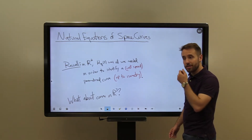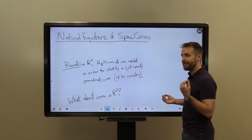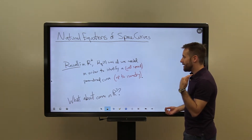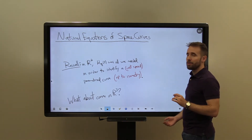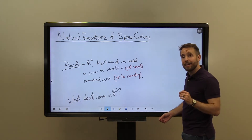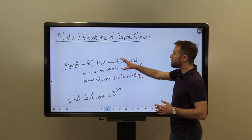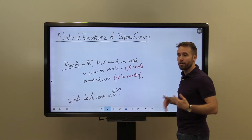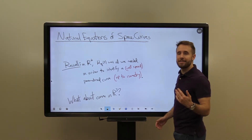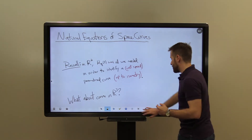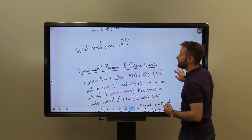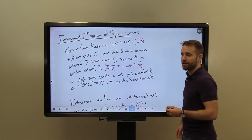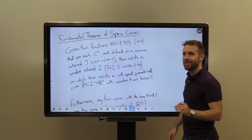So we can ask the question: R3 seems more complicated. We have these two functions now, curvature and torsion. What can we say about parametrized curves in R3? What we get is a result that mimics the plane curve result but is a little more technical because we are working with more complicated systems of equations. We call it the fundamental theorem of space curves, or the fundamental theorem of curves in R3.